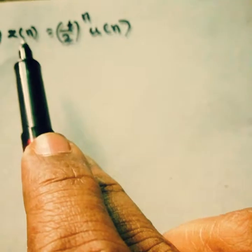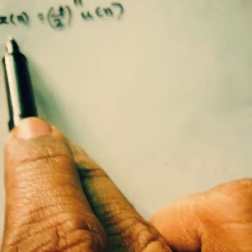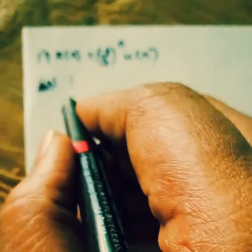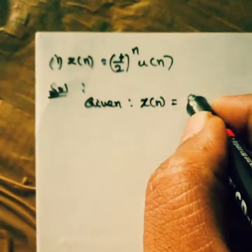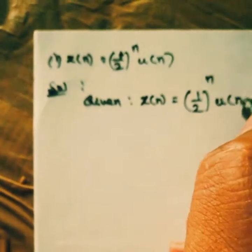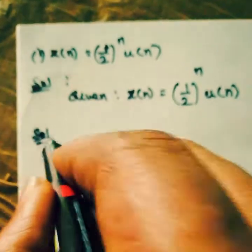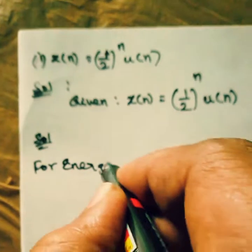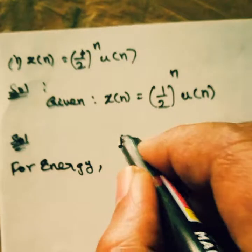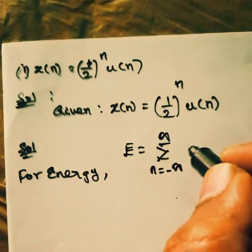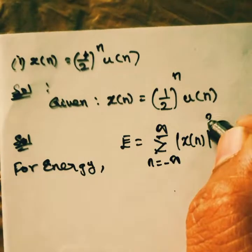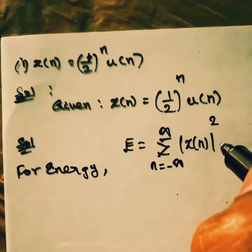The question may be asked like this: determine the value of power and energy from the following signals — x(n) = (1/2)^n · u(n). So, how to find the energy signal? First, write down the given equation: x(n) = (1/2)^n · u(n). For the energy signal, the formula is E = Σ (n = −∞ to +∞) |x(n)|². This is our energy formula.